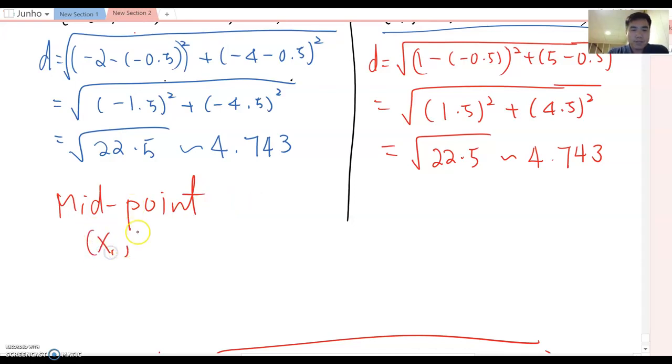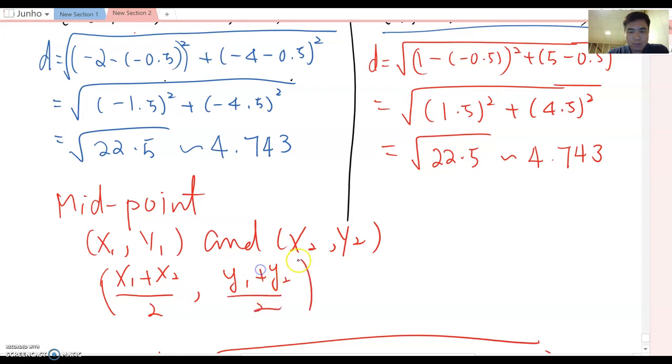If two points x1, y1 and x2, y2 are given, the midpoint becomes x1 plus x2 over 2 and then y1 plus y2 over 2. So that will be the midpoint formula.